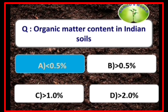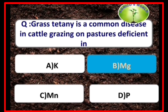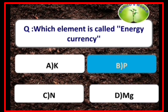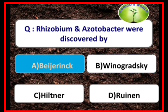Organic matter content in Indian soils is less than 0.5%. Grass tetany in cattle is caused due to deficiency of magnesium. Luxury consumption and hidden hunger are terms related to potassium. Phosphorus is the element called the energy currency. Rhizobium and Azotobacter were discovered by Beijerinck.